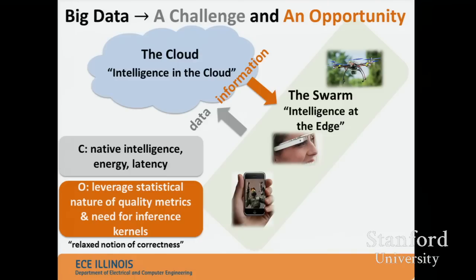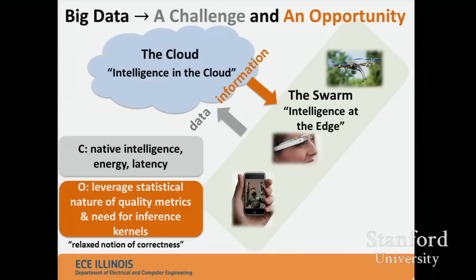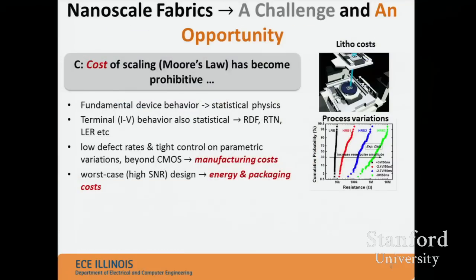When talking about information extraction, the processors we want to build are inference-based — providing decisions, likelihoods, and choices to the user by analyzing the data structure. These kinds of processors have a relaxed notion of correctness, almost like a communication link where the bit error rate is a statistical metric. Similarly, in inference engines, the metrics tend to be statistical in nature, and we can exploit that to reduce energy and come up with new ways of information processing.